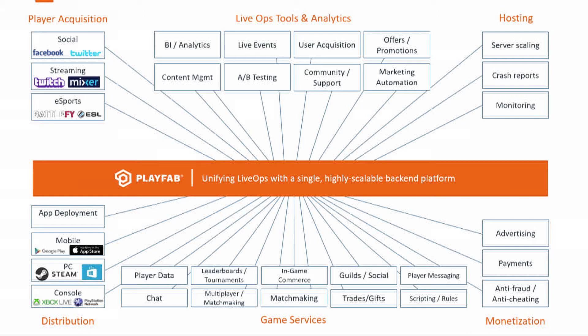This is an overall map of all the back-end components you use to run your game. At the bottom are the core game services — things like player data, logins, guilds, trading, in-app purchasing. All of that is table stakes these days; your team should be focused on the actual gameplay differentiators, the things that make people want to come back to your game, the things that make you unique. Around the sides you have hosting, distribution through different channels like various platforms or Steam, how you monetize, and how you acquire your players. Up top is what we're talking about now: your LiveOps tools, your analytics, everything that flows into managing your game for the long term and maximizing your revenues.